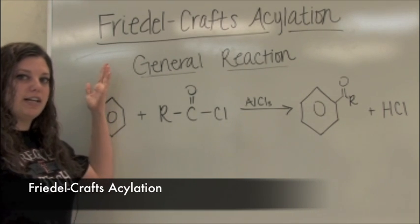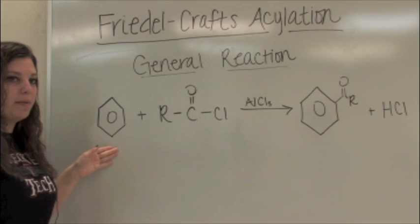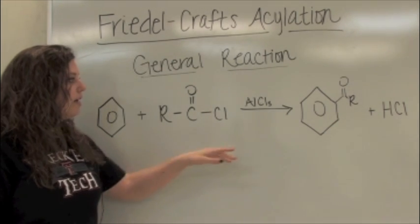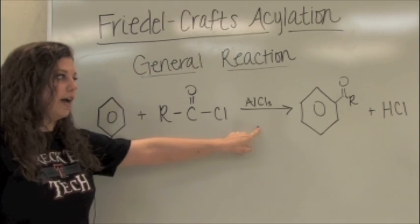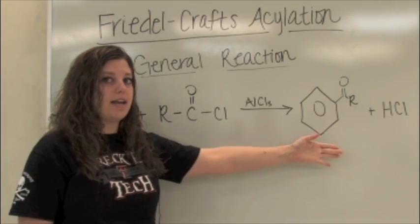I'm going to be talking about the Friedel-Crafts acylation reaction. In the general reaction, you take an aromatic compound and an acyl chloride, react it with aluminum trichloride to produce an acylated aromatic compound and hydrogen chloride.